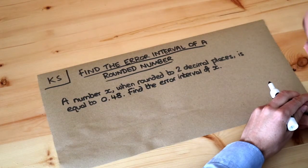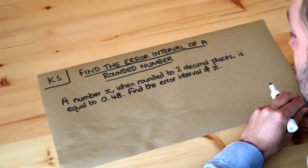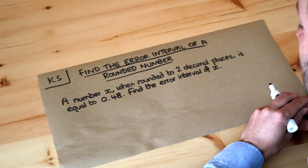A number x when rounded to two decimal places is equal to 0.48. Find the error interval of x.